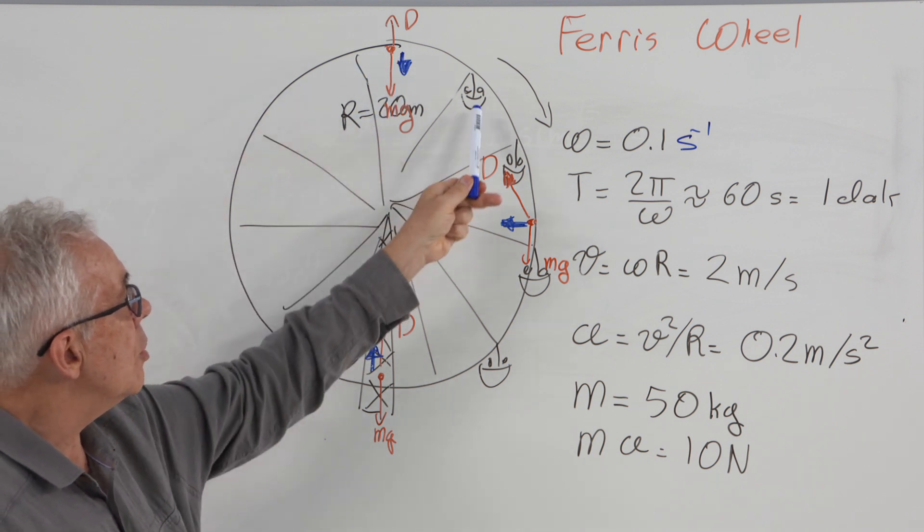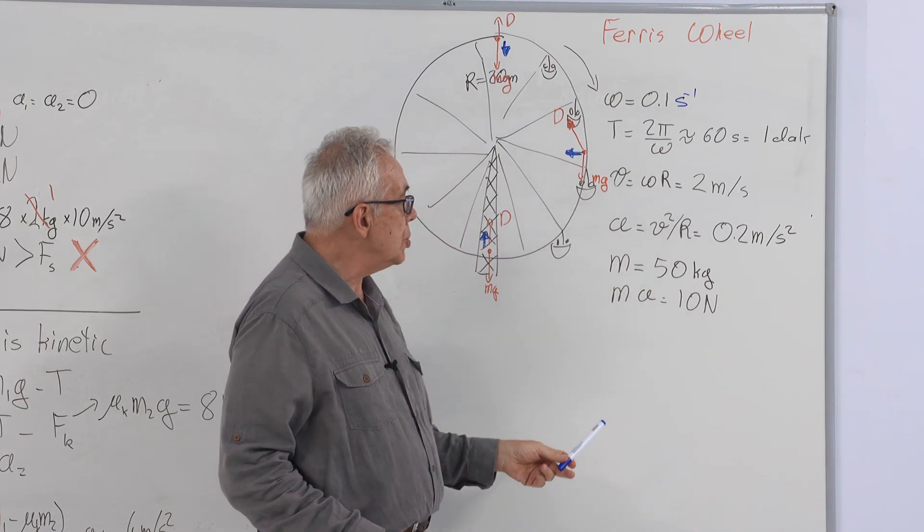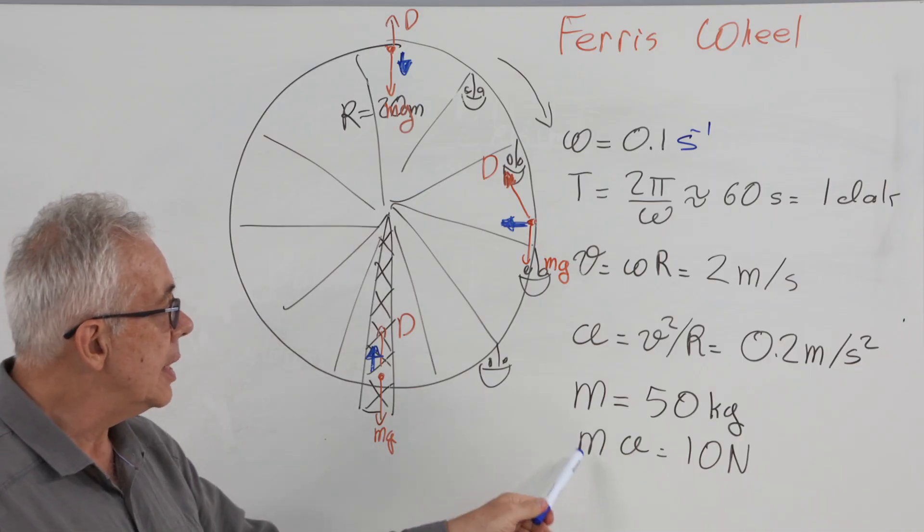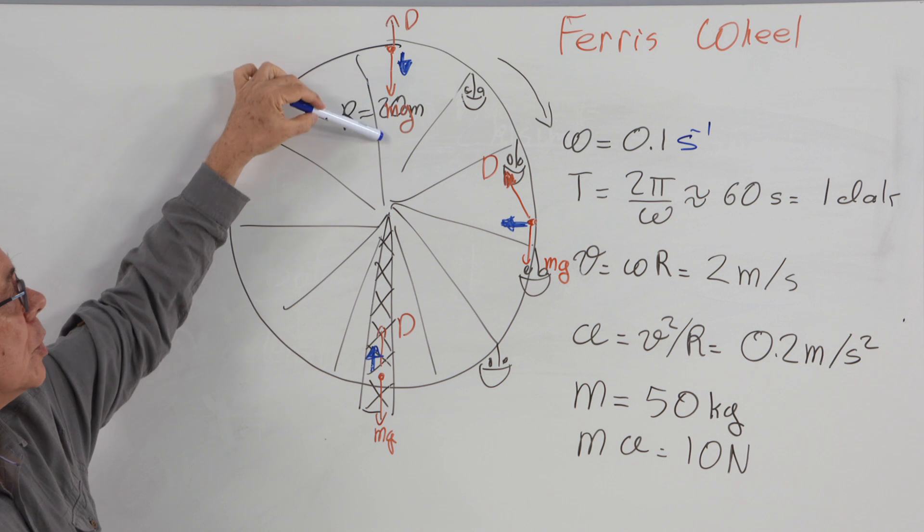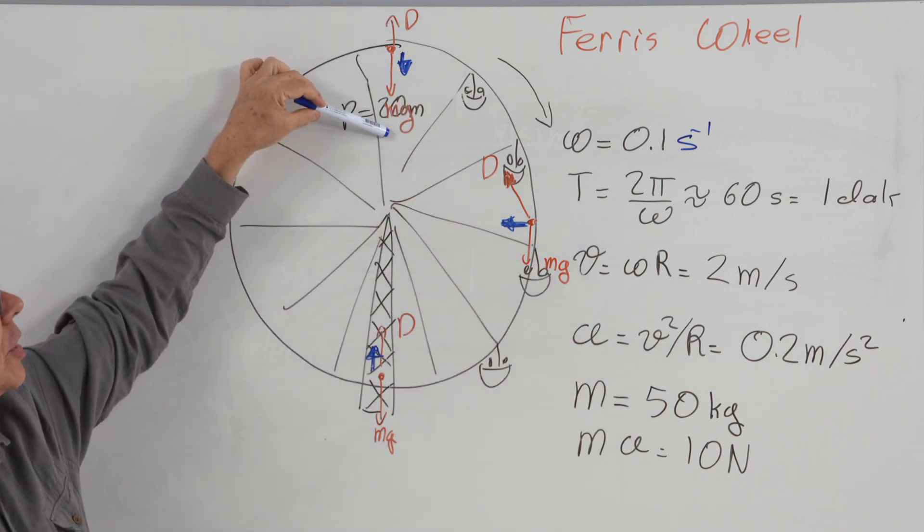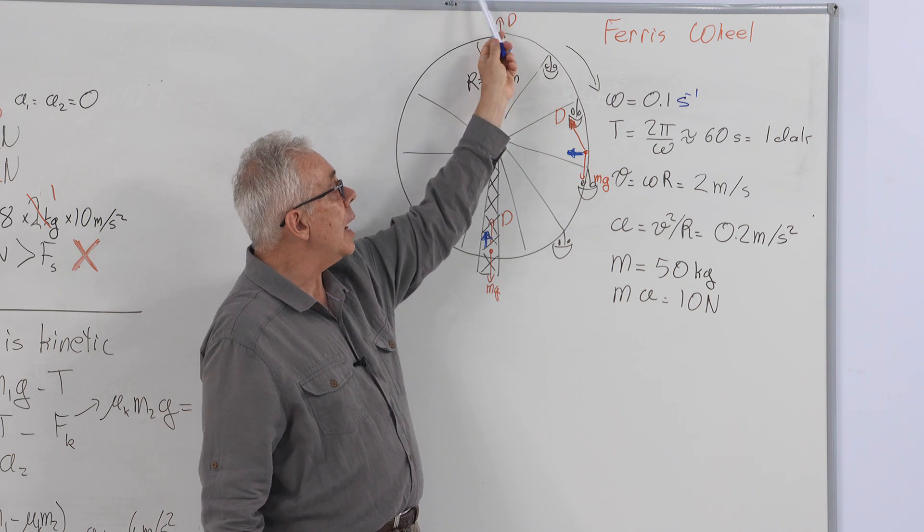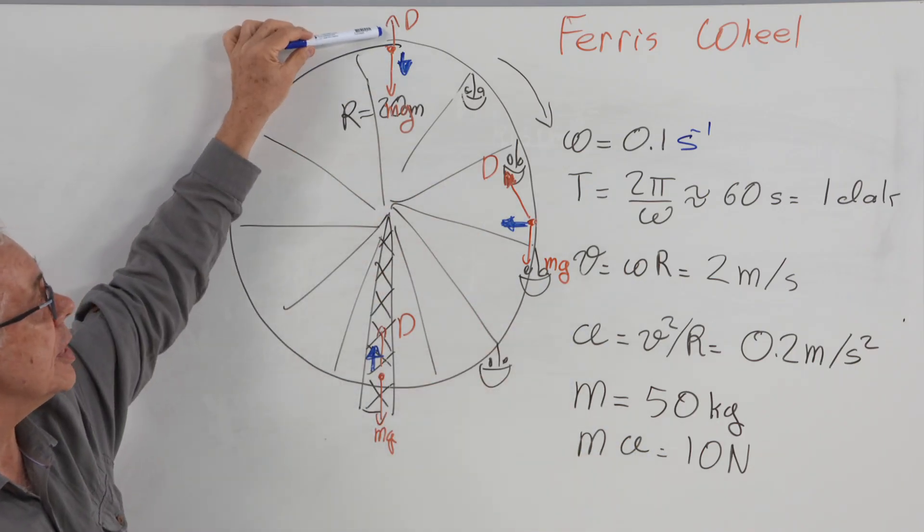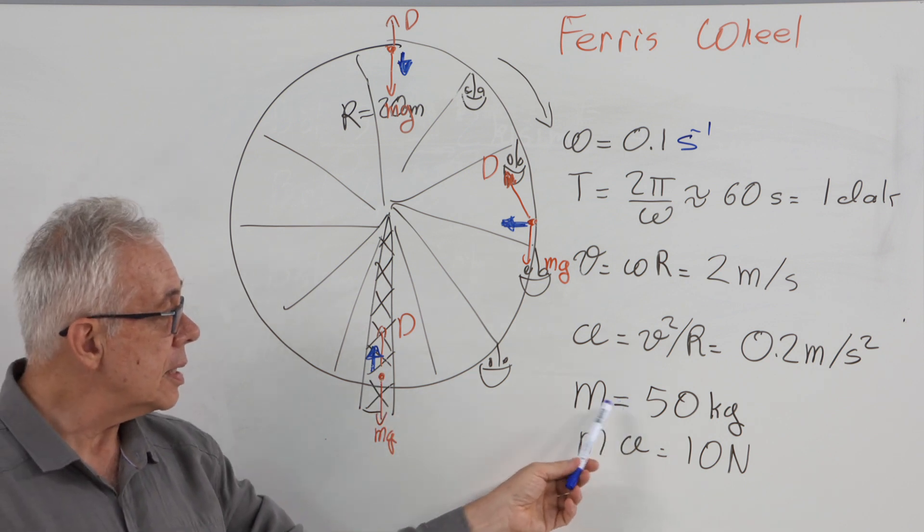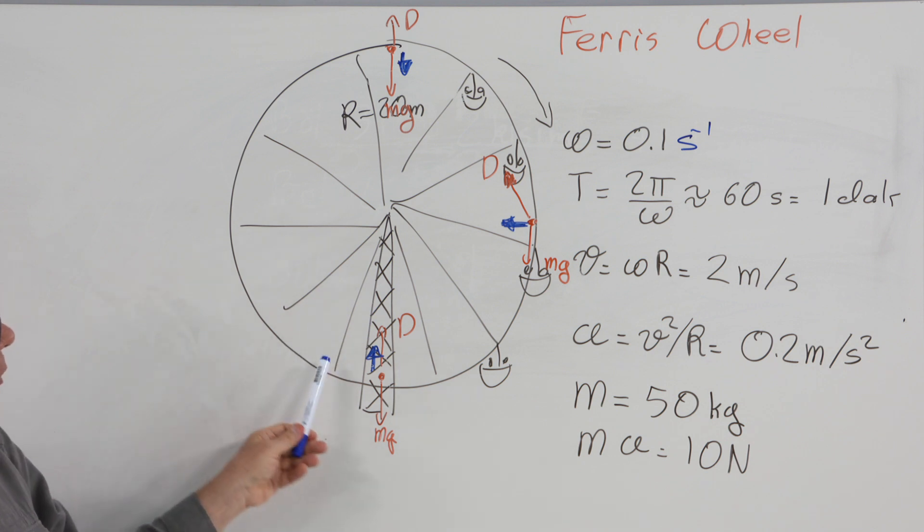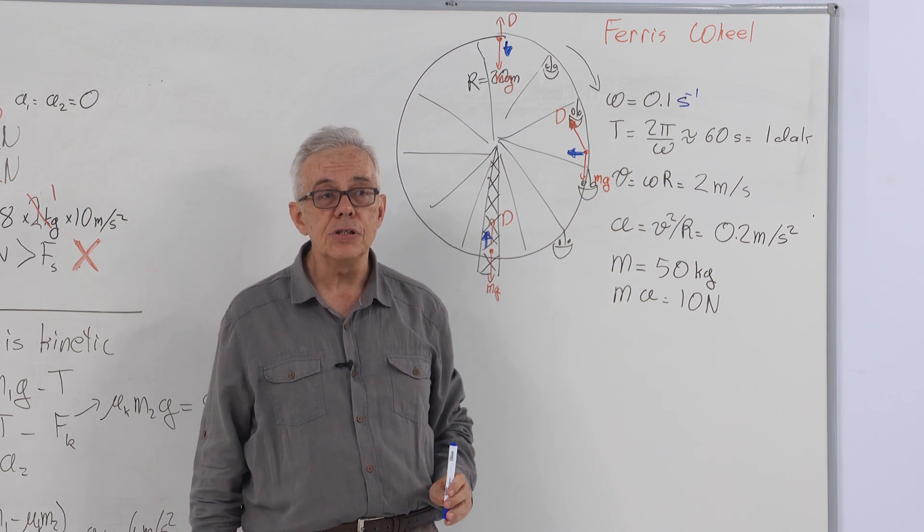Now, let's look at a kid of mass 50 kilograms riding this Ferris wheel. Given that the centripetal acceleration is 0.2, the net force on him, M A, is 10 newtons. When he is at the top, the gravitational force is downward, 50 kilogram mass, so it is 500 newtons. There is the contact force due to the seat, and that is pushing him up. The sum is 10 newtons downward, so the contact force is 490 newtons. Down here, gravitational force is still 500 newtons. Net force is 10 newtons, this time up, so that the contact force is 510 newtons up.